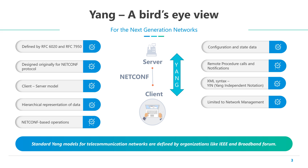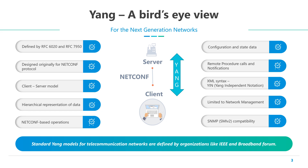Unlike generic data models, the scope of Yang is exclusively limited to network management. It does not aim to do anything else. Historically, the Simple Network Management Protocol or SNMP has been used for network management. The associated data modeling language is the SMI v2, represented by MIB files supported by a particular network element. For this reason, Yang supports compatibility with SMI v2. SMI v2 files can be converted into Yang format in a one-way direction.